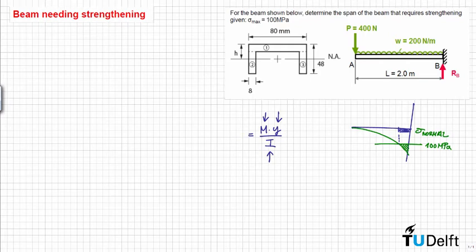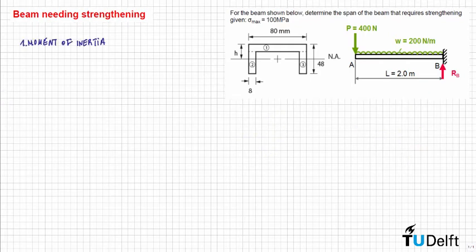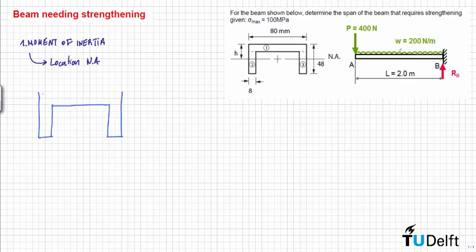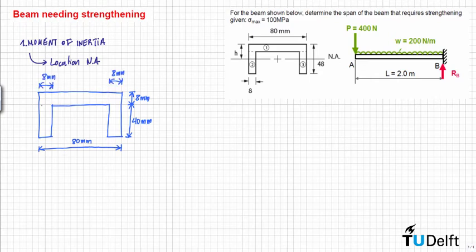We start by calculating the moment of inertia. First we need to estimate the location of the neutral axis. Looking at the cross-section, we define part 1 as the flange, part 2 as the left web, and part 3 as the right web.